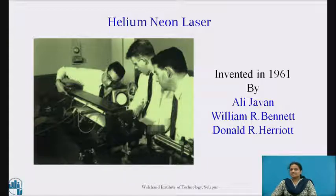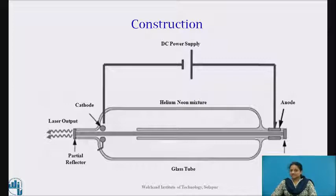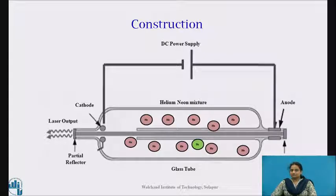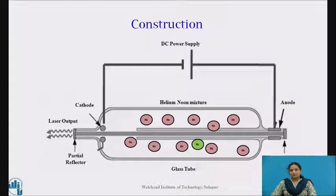The helium-neon laser was the first continuous wave laser. It was built in 1961 by Elizabeth, Bennett and Harriet at Bell Telephone Laboratories. The construction of helium-neon laser includes a long discharge tube filled with a mixture of helium and neon gases in the proportion 10 to 1. The electrodes are provided in the discharge tube to produce the discharge in the gas, and they are connected to a high voltage power supply. In the diagram, we can see that the tube is sealed by inclined glass windows arranged at its two ends, and the two mirrors are arranged on the axis of the tube externally, which form the Fabry-Perot optical resonator.